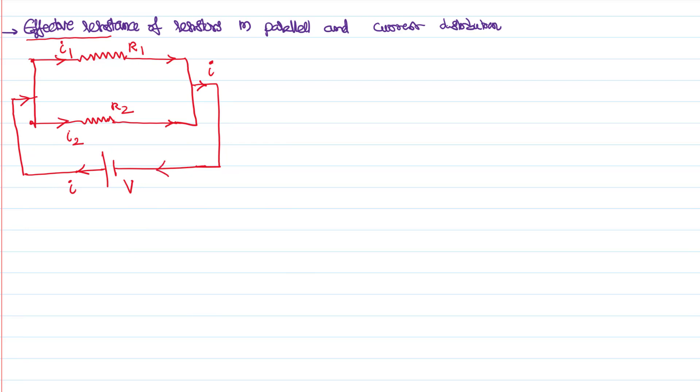So this is how current distributes in parallel circuits. You can say the current I, I total, is divided as I1 as well as I2. As charges are conserved, when you combine both of them, you will get back your total current.